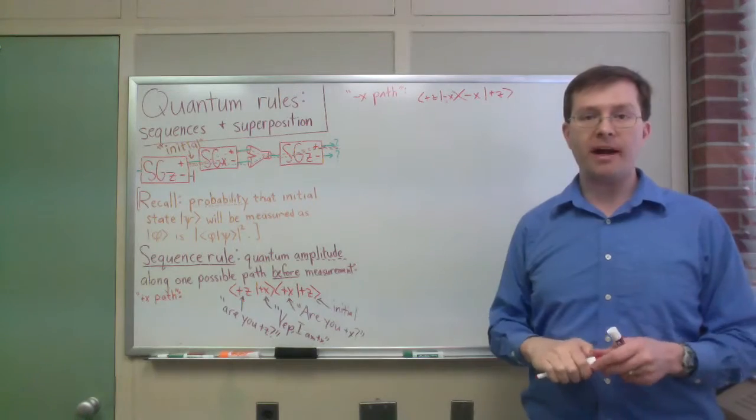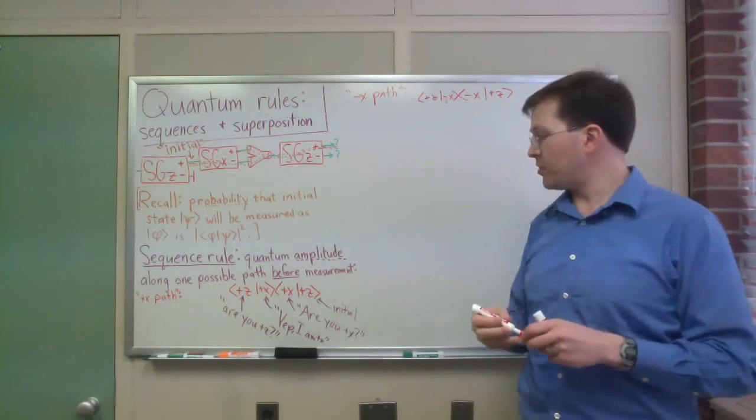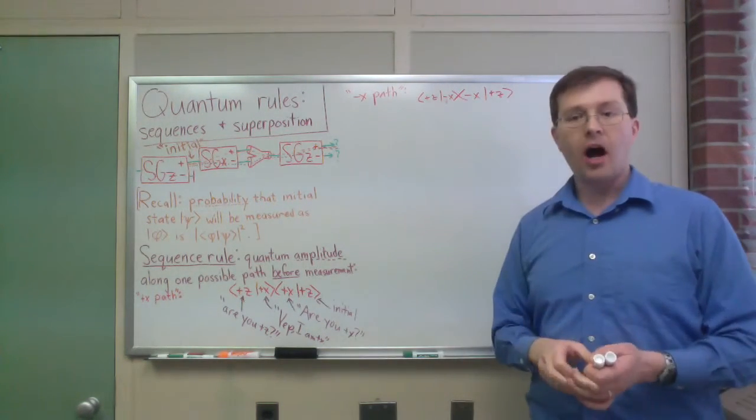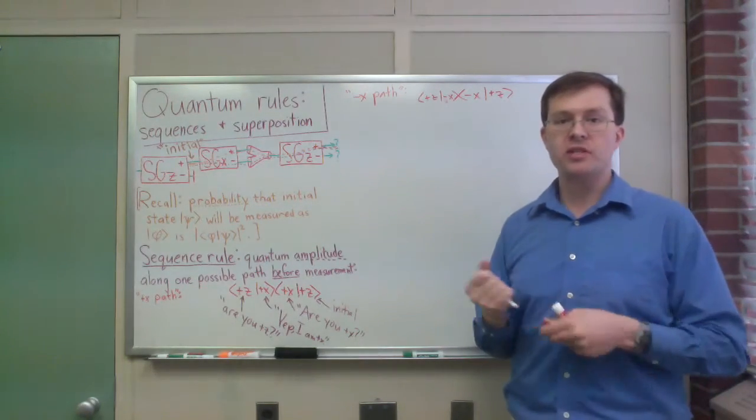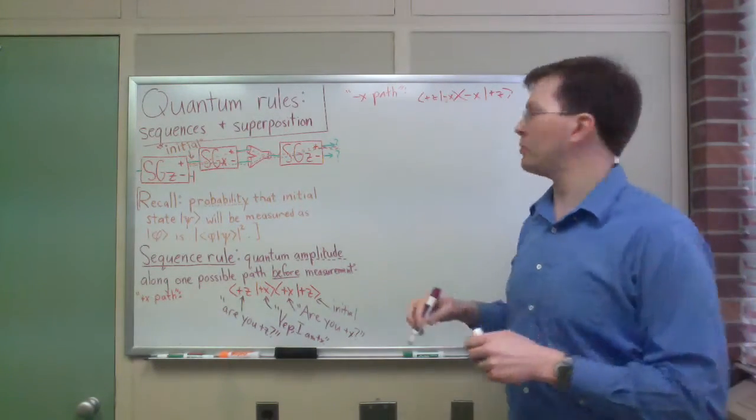That is the amplitude for my minus x path. I can just put those two together and see how that works. All right, so where does that leave me? I now have these two different amplitudes. I now use the superposition rule to put them together.